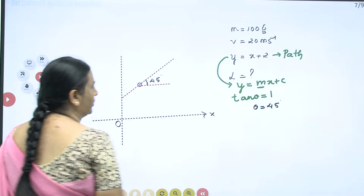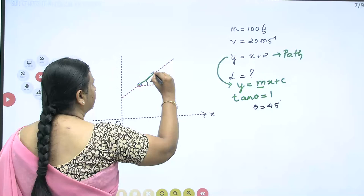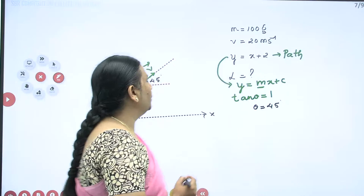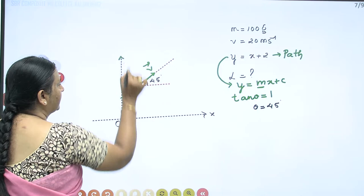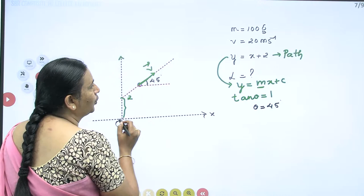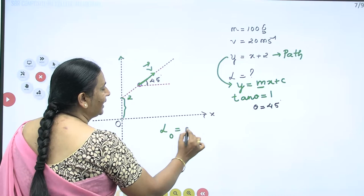This is the direction of the velocity vector. Its mass is given. The y-intercept is 2, meaning this distance on the y-axis is 2. To find the angular momentum about point O, I can use L = R_perpendicular × P. If V is in this direction, the momentum is in the same direction.